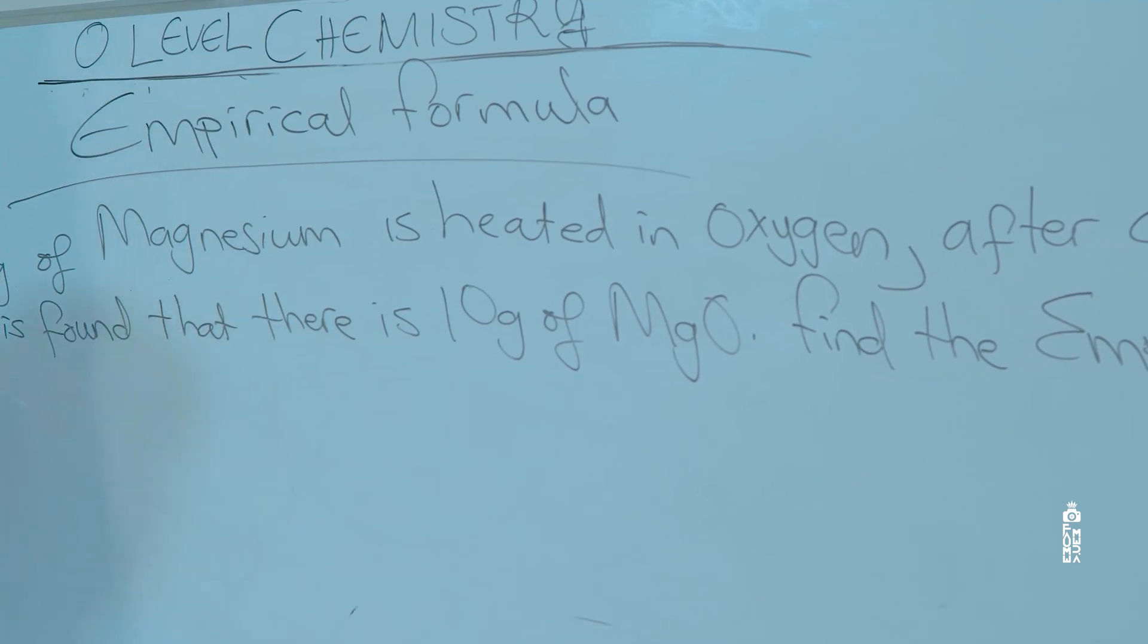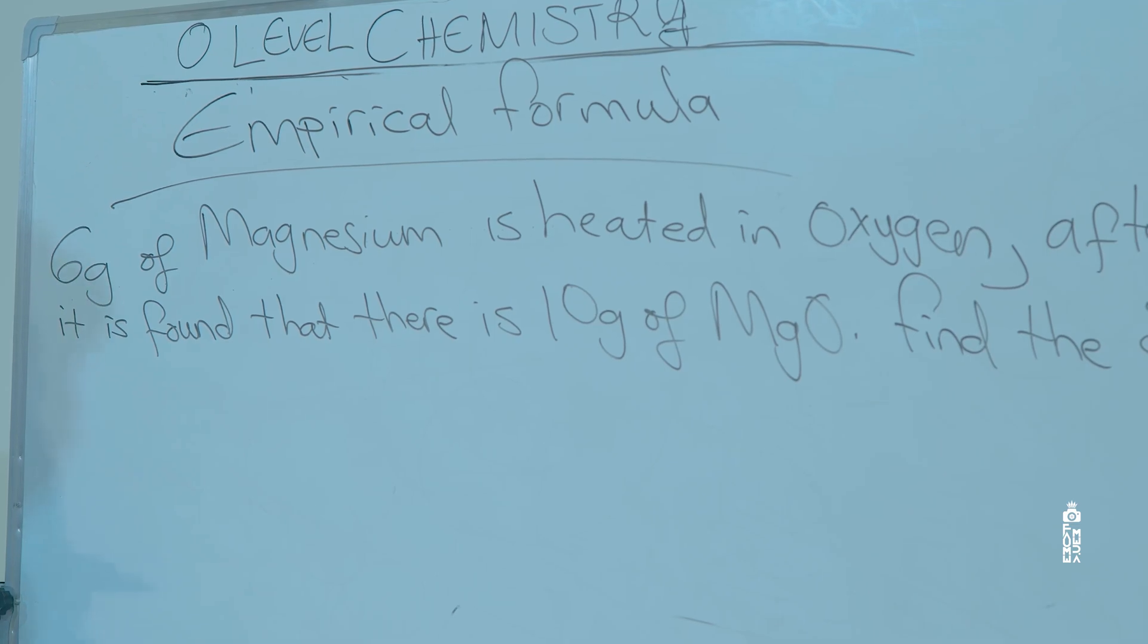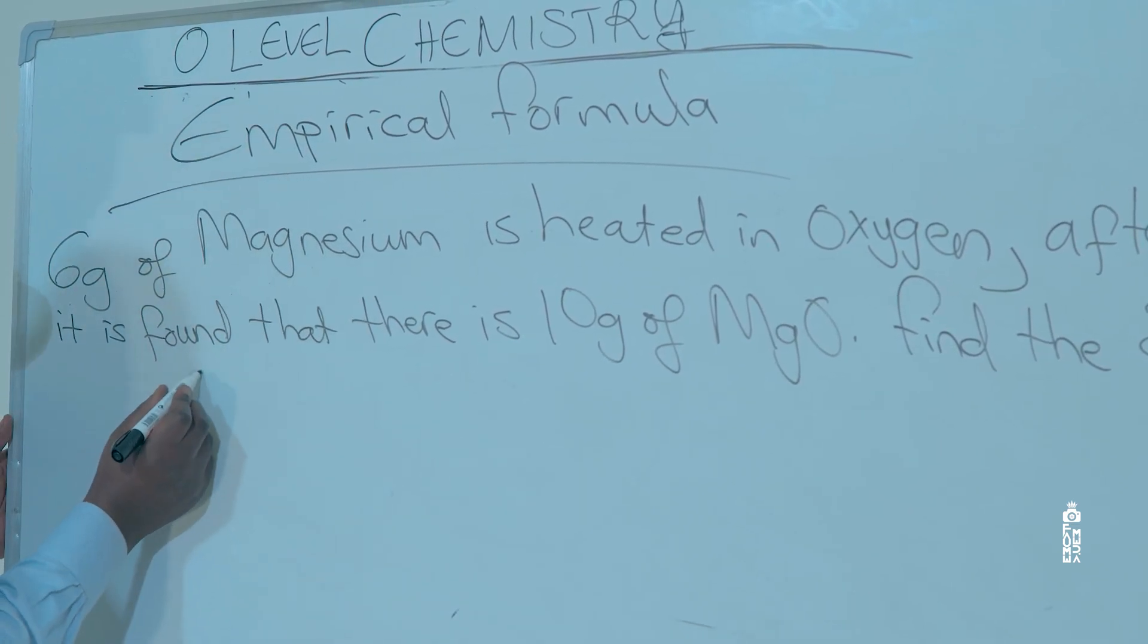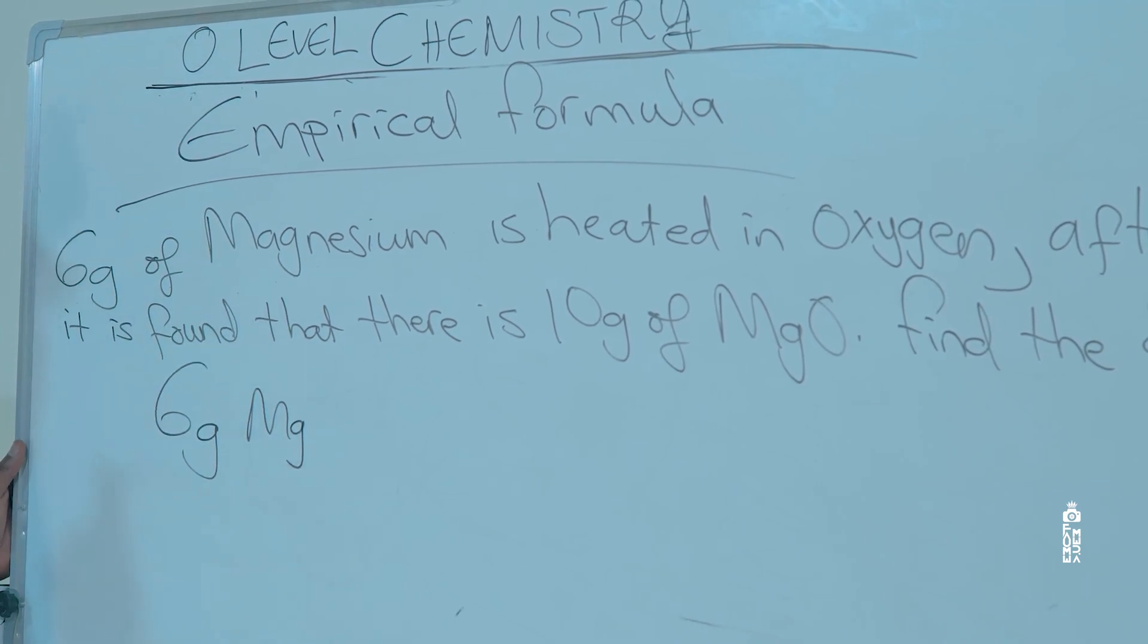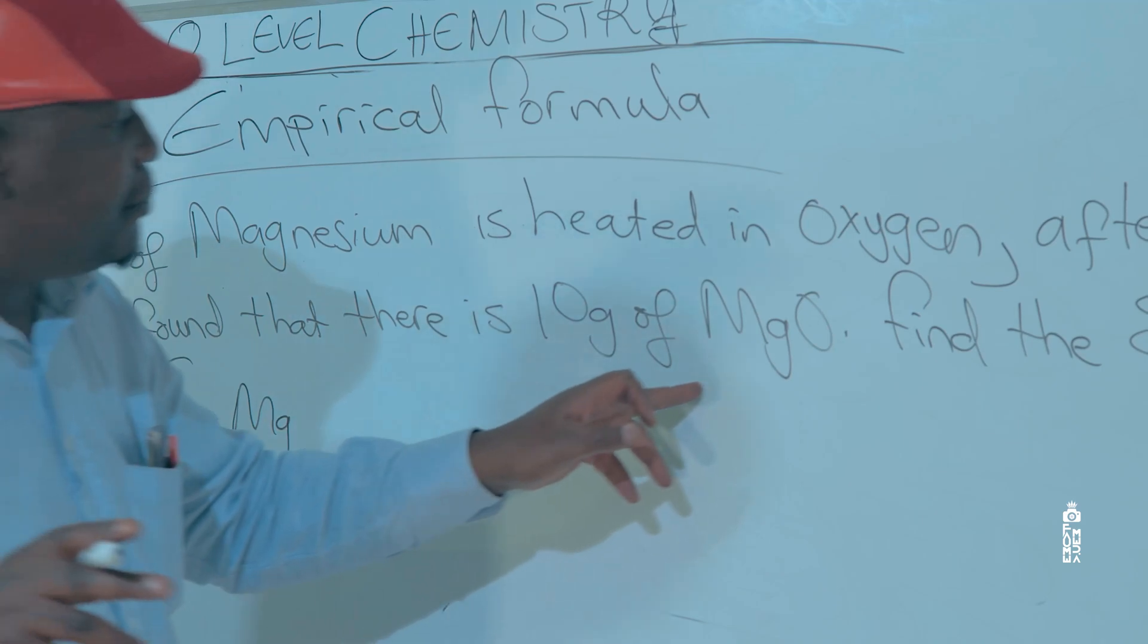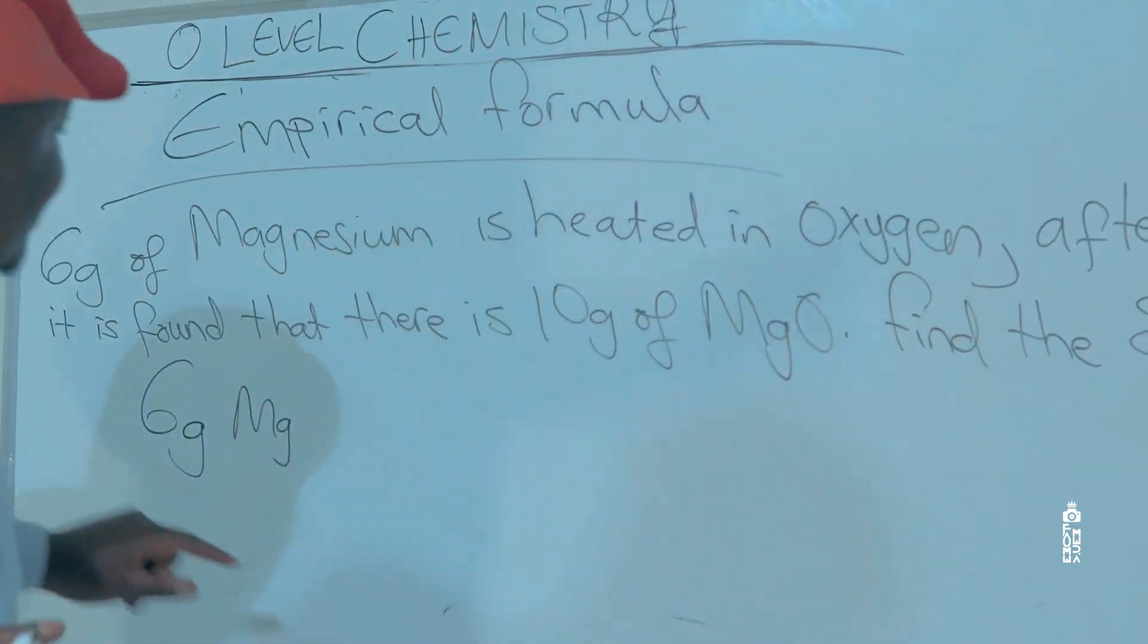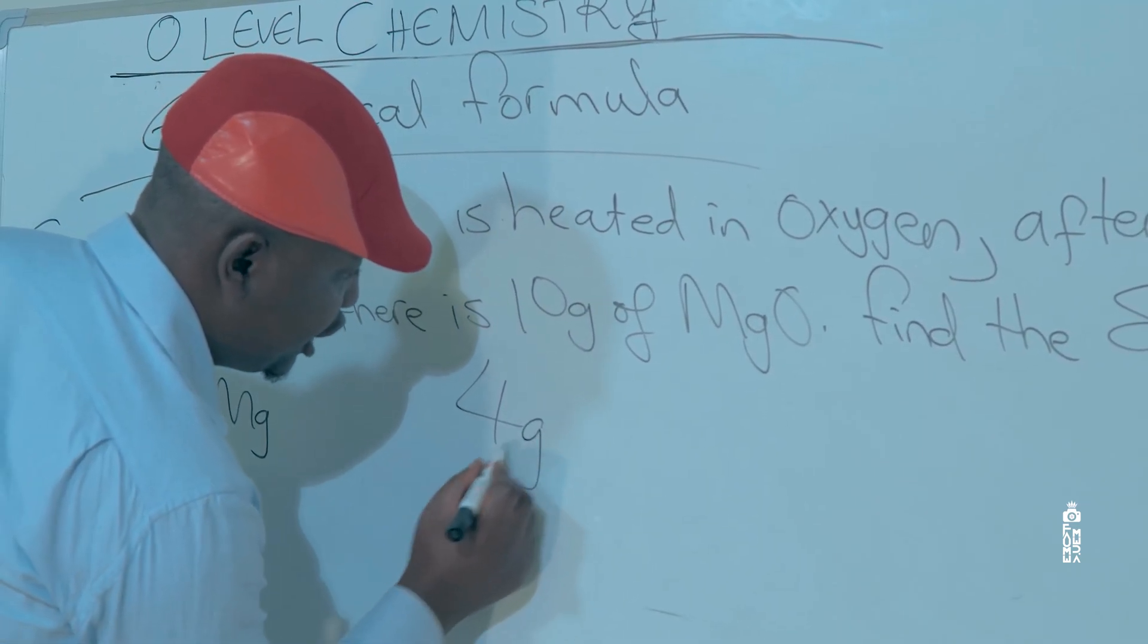it is found that there is 10 grams of magnesium oxide. Find the empirical formula. Remember we are given 6 grams of magnesium and the product is 10 grams of MgO, meaning to say if there are 6 grams of magnesium, it means there are 4 grams of oxygen.